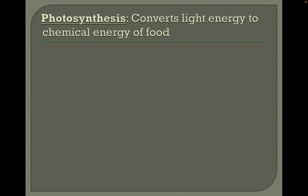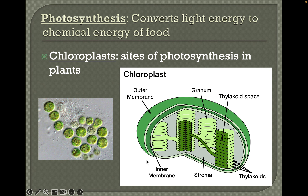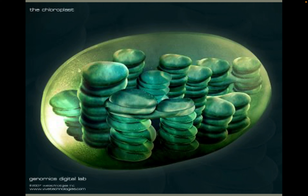Photosynthesis converts light energy into chemical energy in the form of food. Chloroplasts are the site of photosynthesis in plants, and I also discussed chloroplast structure in the lecture on cell types. They have two membranes — an outer membrane and an inner membrane. There are disc structures called thylakoids; a stack of thylakoids we call a granum. The thylakoids are hollow inside and filled with a fluid — basically folded-up membrane — which gives them a lot of surface area where some of the reactions for photosynthesis take place. Here's a nice little model.